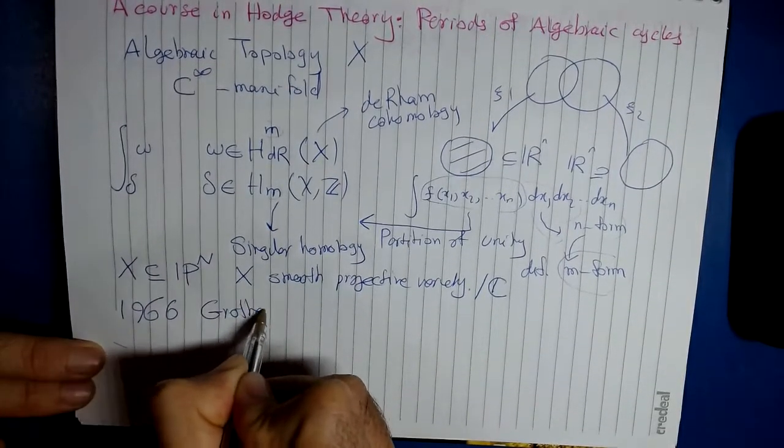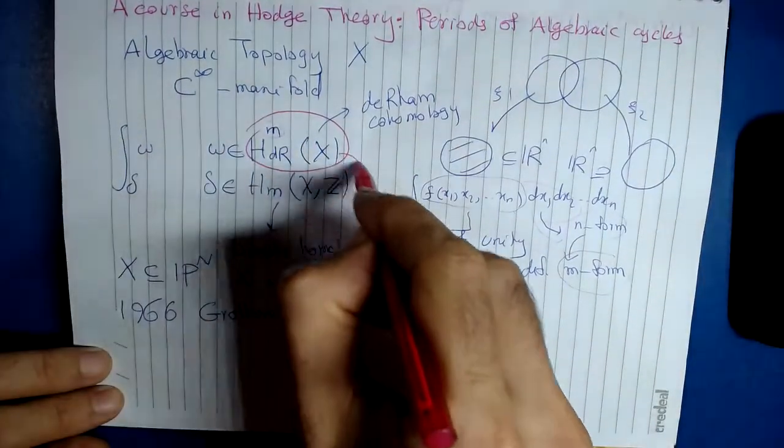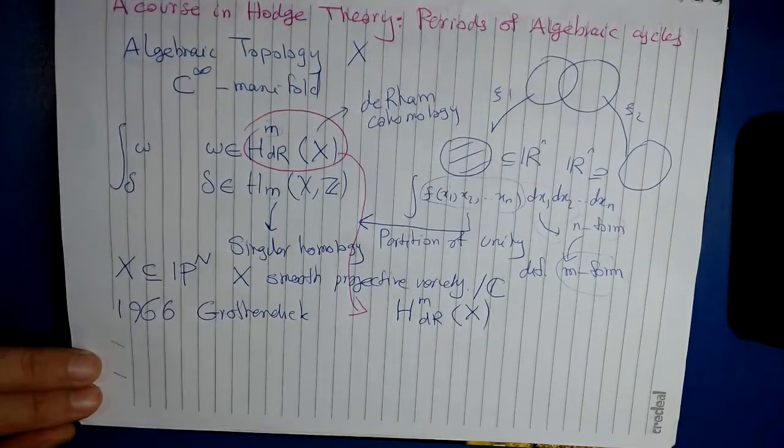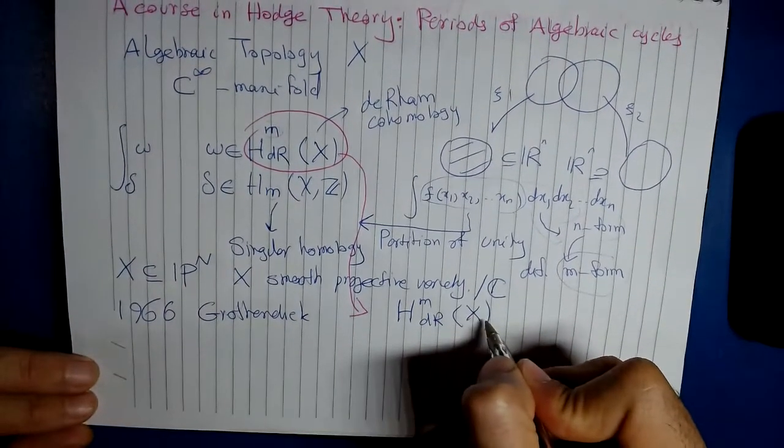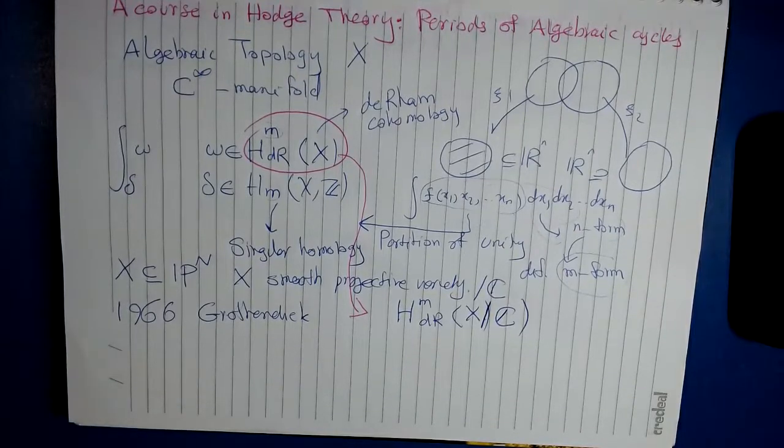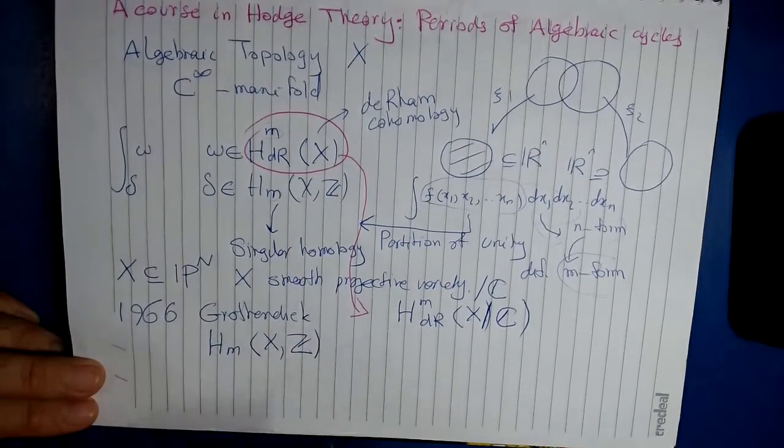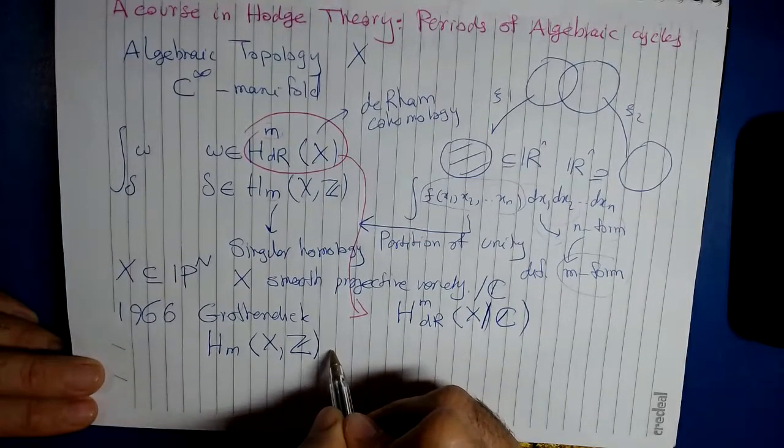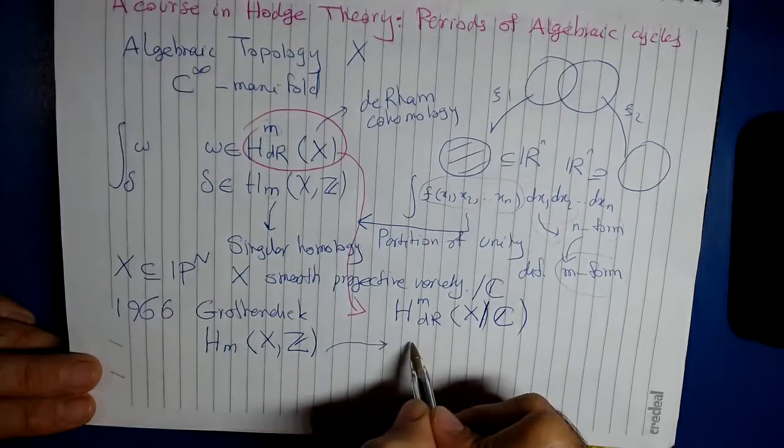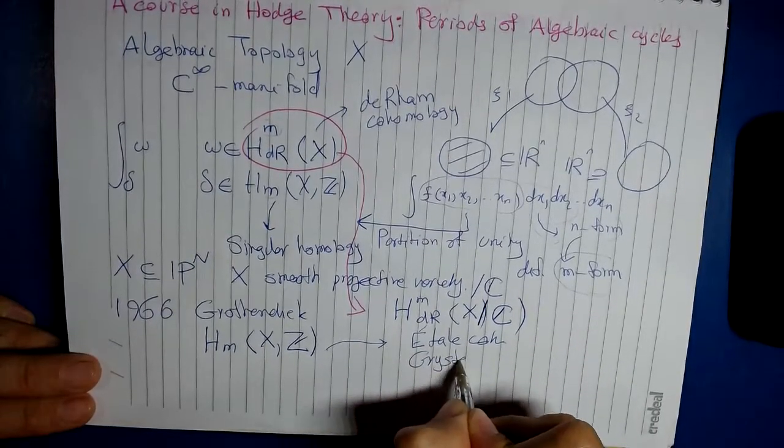In 1966 Grothendieck observed that instead of the de Rham cohomology, we can define something called algebraic de Rham cohomology, that in the course we will define. Usually when we want to write the algebraic de Rham cohomology, we put this slash over C. At the same time, Grothendieck and the people around him realized that singular homology is something typical to topology, and there is no equivalent version of it in algebraic geometry. But their effort to translate this to algebraic geometry resulted in étale cohomology and crystalline cohomology.